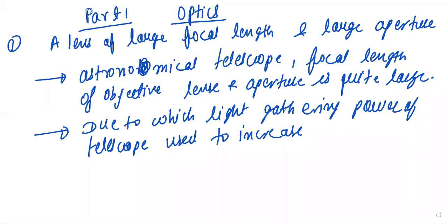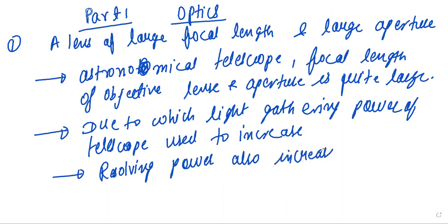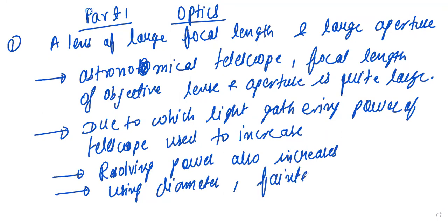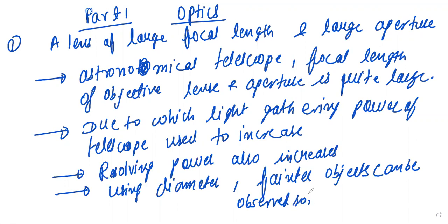The resolving power also increases. By using a large diameter lens, fainter objects — meaning small-sized objects — can also be resolved and observed.